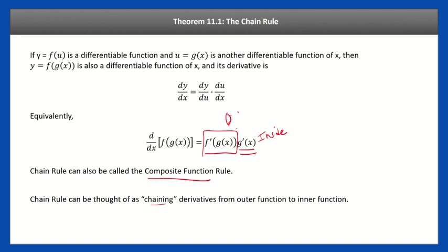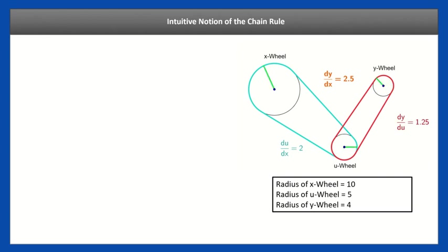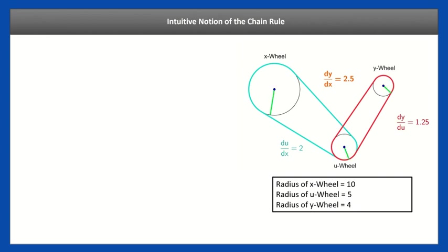Here's an intuitive notion of the chain rule. Think of gears or cogs — like a belt tied around poles in a pulley system. This actually illustrates the chain rule. As you chain the belt from one wheel to another, the speeds multiply to give the speed of the next one. The velocity of a wheel is distance over time — it's traveling around the circle, so the distance is 2π times the radius, divided by the time. That's the speed for all of these wheels.